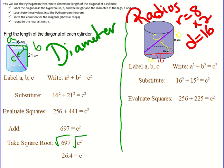From here add those two numbers together. I get 481 equals C squared. Now I'm going to take the square root of both sides. The square root of 481 and the square root of C squared. When I do that the square root of C squared is C, and the square root of 481 is 21.9. So the length of the diagonal in this cylinder is 21.9 centimeters.